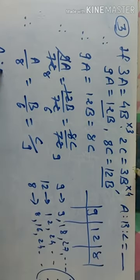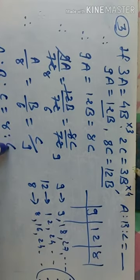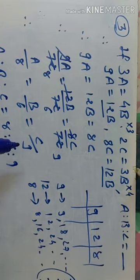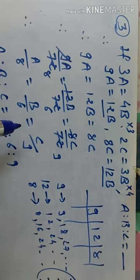Therefore A : B : C = 8 : 6 : 9। आगे देखते हैं, question number 4।